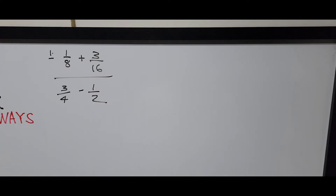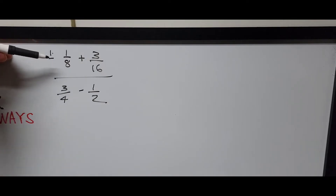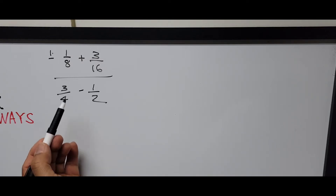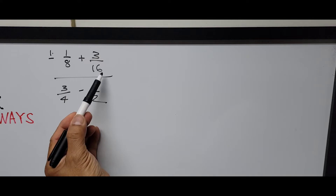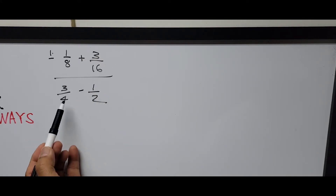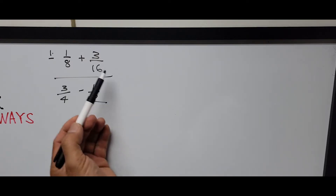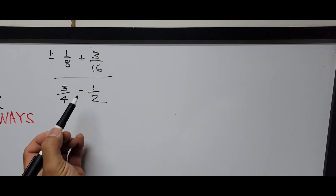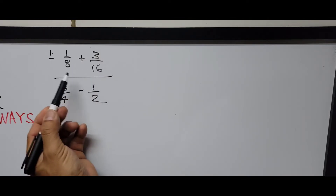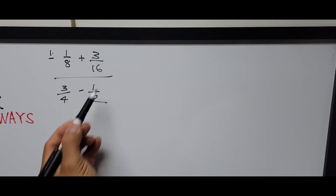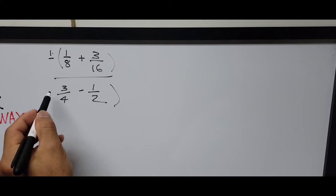The numerator of this complex fraction is a series of fractions, and the same is true for the denominator. We need to find a common denominator to solve this problem. Looking at the denominators — 16, 8, 4, and 12 — these are all even numbers. Since 16 is the highest and all others are divisible by it, we use 16 as our common denominator. Multiply the whole thing by 16.